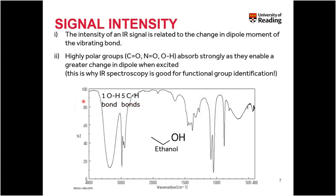The answer is related to the change in dipole moment of the vibrating bond. Essentially, the bigger the change in dipole moment as the bond vibrates, the larger the absorbance will be. Highly polar groups such as carbon-oxygen double bonds, nitrogen-oxygen double bonds, and oxygen-hydrogen single bonds absorb very strongly because they experience a much larger change in dipole when the bond is excited. This is one key reason why infrared spectroscopy is very good for functional group identification.